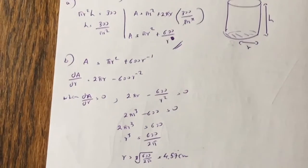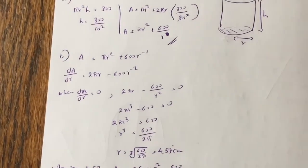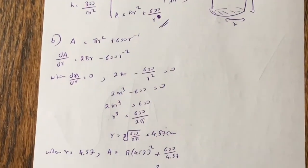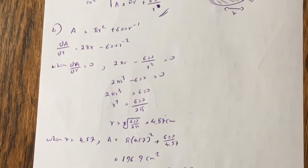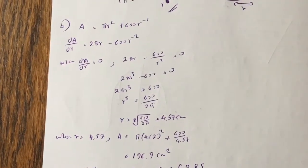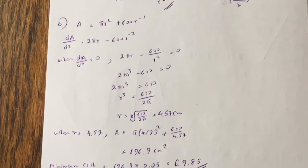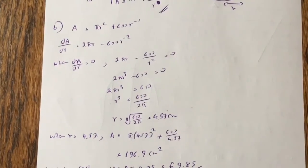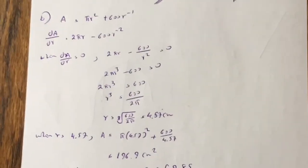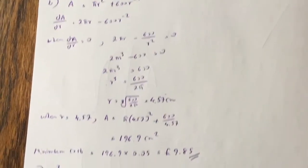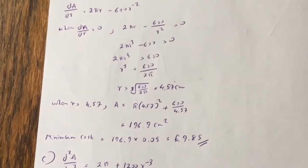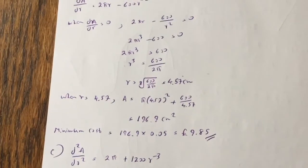And then you differentiate a, you get da dr equals to 2 pi r minus 600 r to the minus 2. So when da dr equals to 0, r works out to be 4.57 centimetres. So when r equals to 4.57 centimetres, area equals to pi times 4.57 squared plus 600 over 4.57, that works out to be 196.9 centimetres squared. You times that by 5p, or 0.05 pounds, and that works out to be 9 pounds and 85.